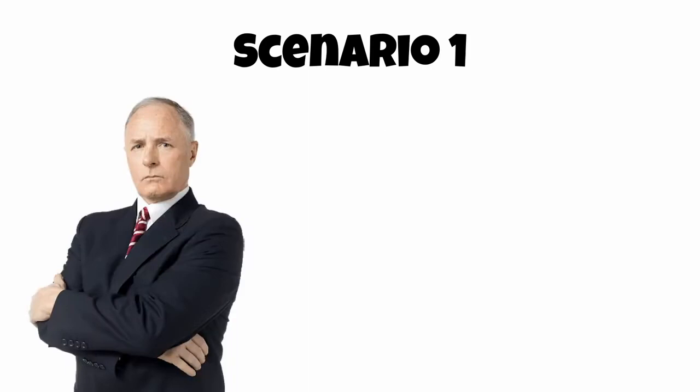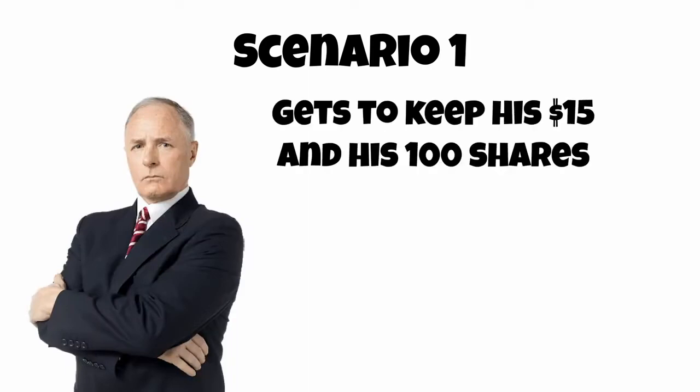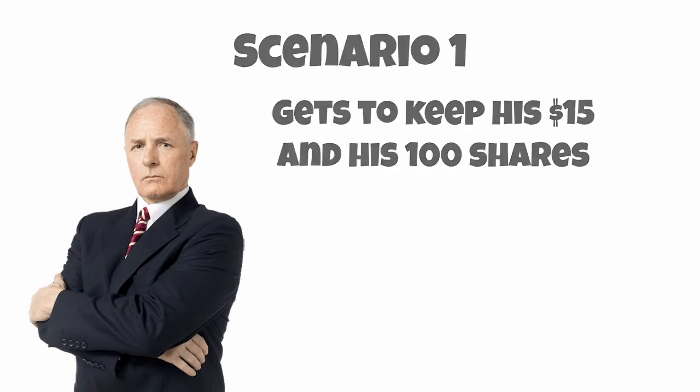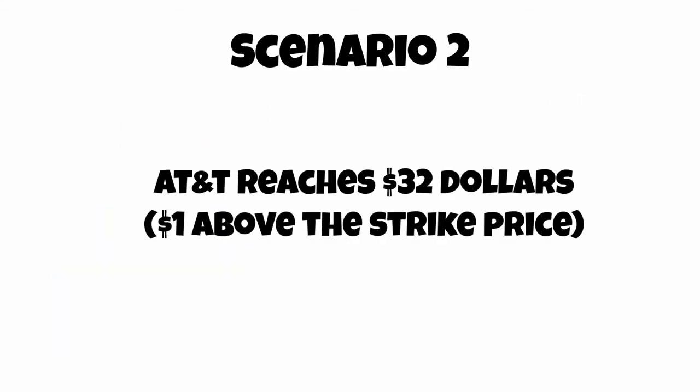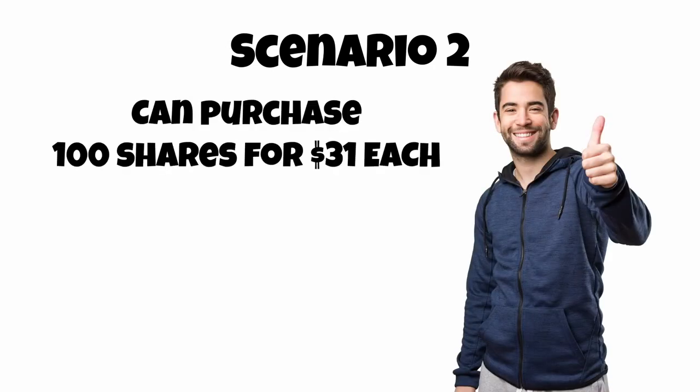Bob, on the other hand, who was paid $15 from Dave, is very happy as he made his money and has no other consequences. Now let's look at a different scenario in which AT&T were to rise to $32 by January 29th. Dave has the option to buy 100 shares at the price of $31 each at or before January 29th if the price is above $31.